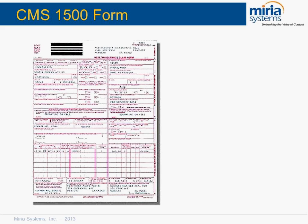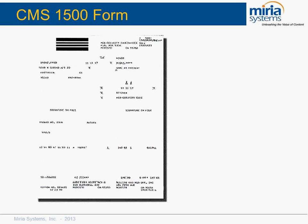One thing done to improve accuracy of data capture is to do a red dropout. These medical forms come in either red or black and white. The red is dropped out and all you're left with is the data. When there are lines and things next to the data you want to capture, they all drop out, making OCR more accurate because there's no confusion from surrounding elements.